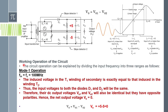This entire balanced slope detector we are going to discuss with three different modes of operation, to understand how the circuit is working. The circuit operation can be explained by dividing the input frequency into three ranges. In the first mode of operation, we are considering the input signal is the unmodulated carrier frequency, so fin is equal to fc — I am assuming 100 MHz is the carrier frequency. That unmodulated carrier frequency is applied towards the primary of the transformer.